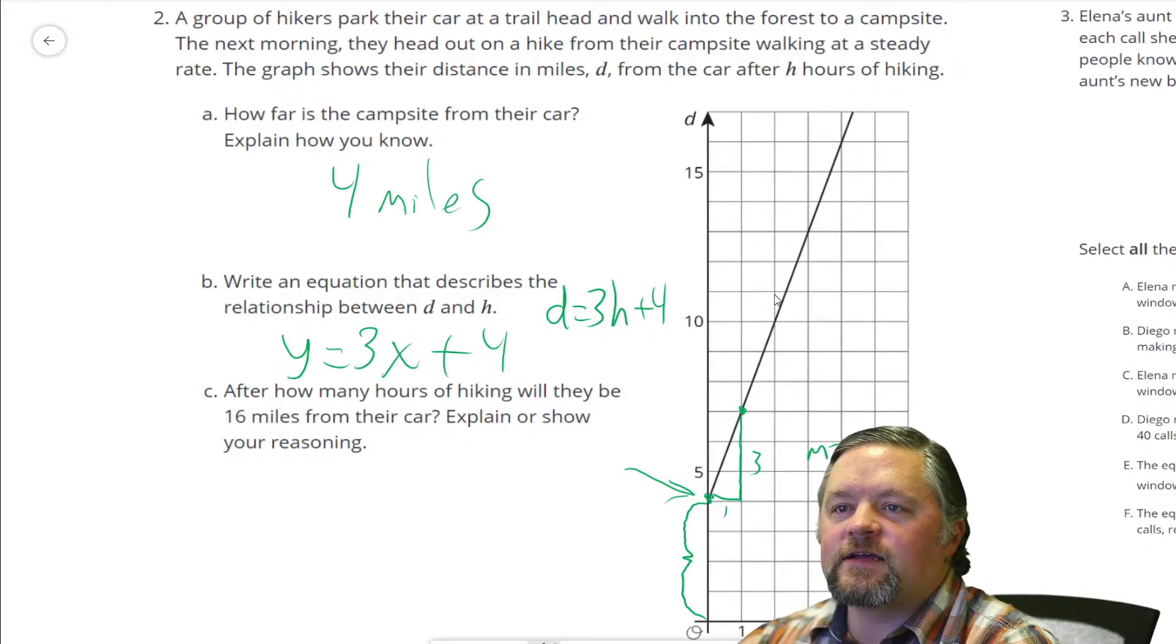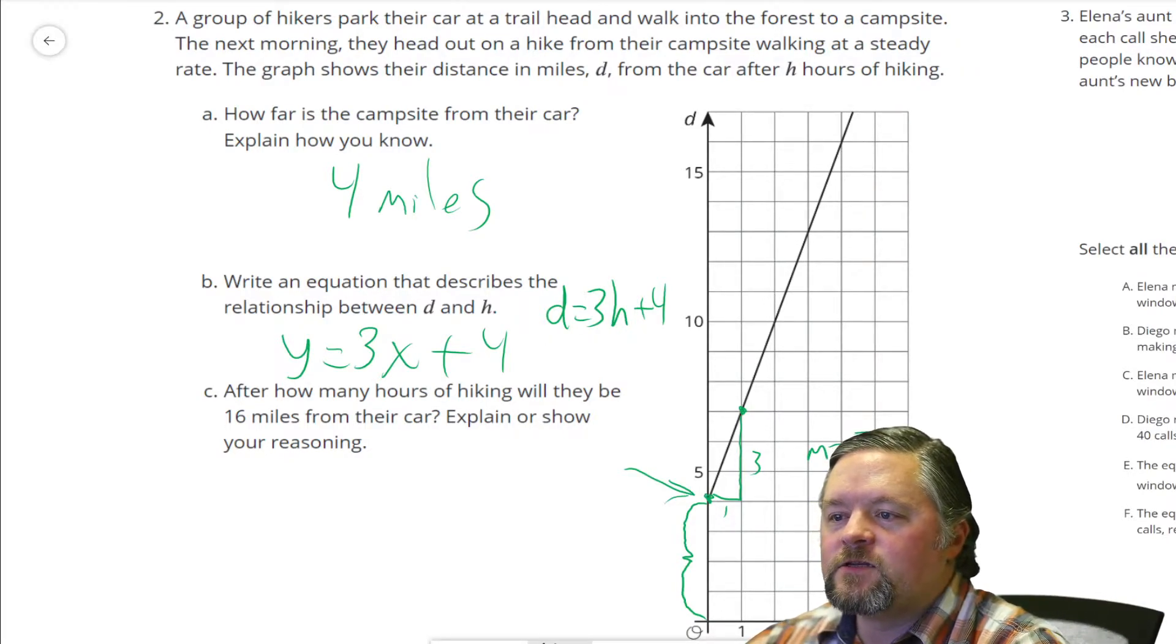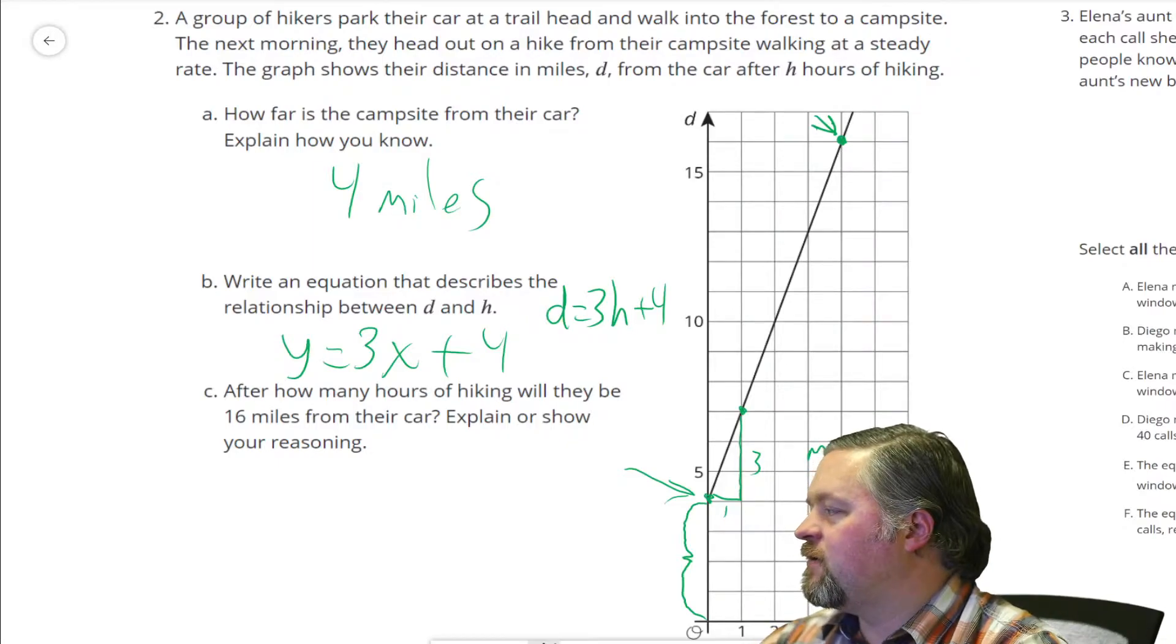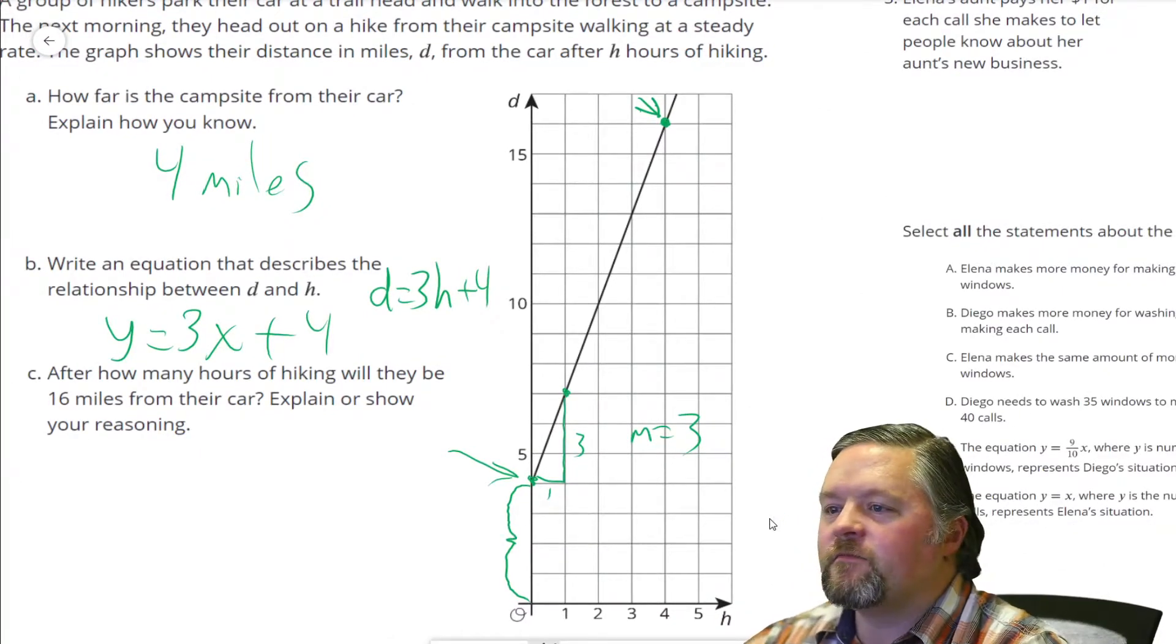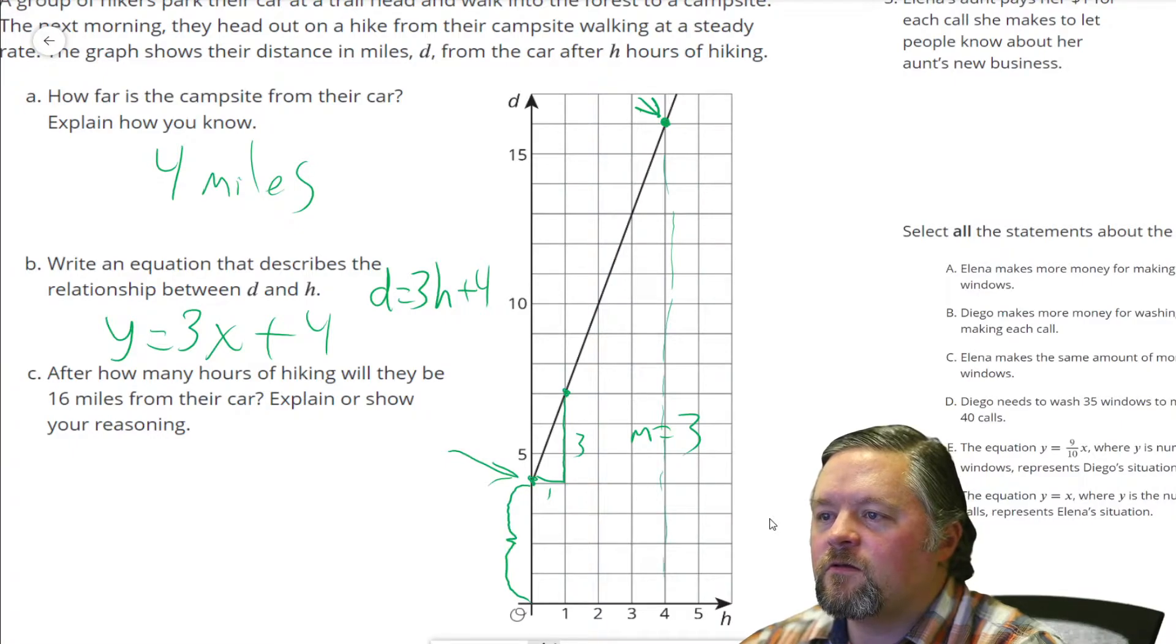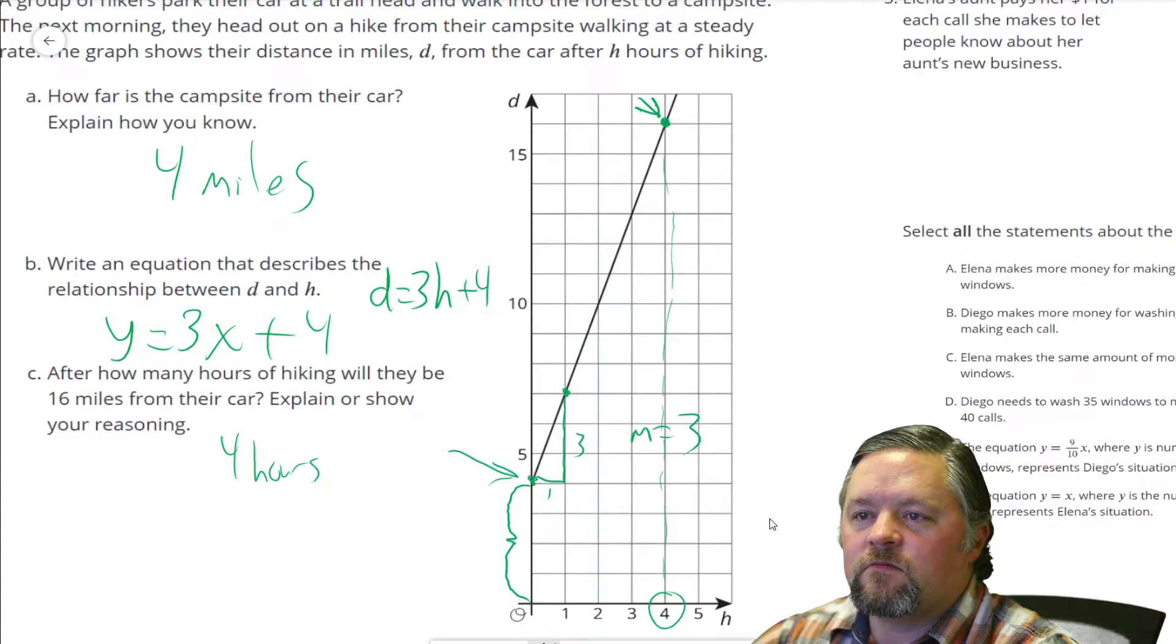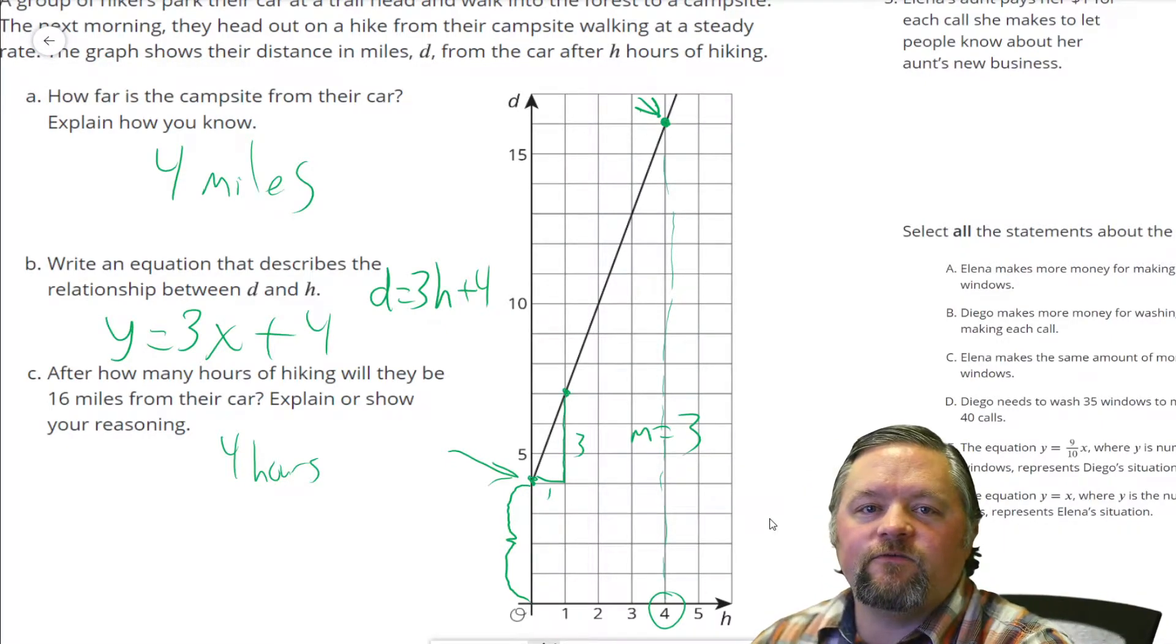Okay, next question. After how many hours of hiking will they be 16 miles from the car? So 16 miles from the car, that's a D of 16. That shows up right here on our graph. Let me just kindly remove my head from being in the way. That looks like 4 hours. So 4 hours after they hike there, 16 miles away from their car.